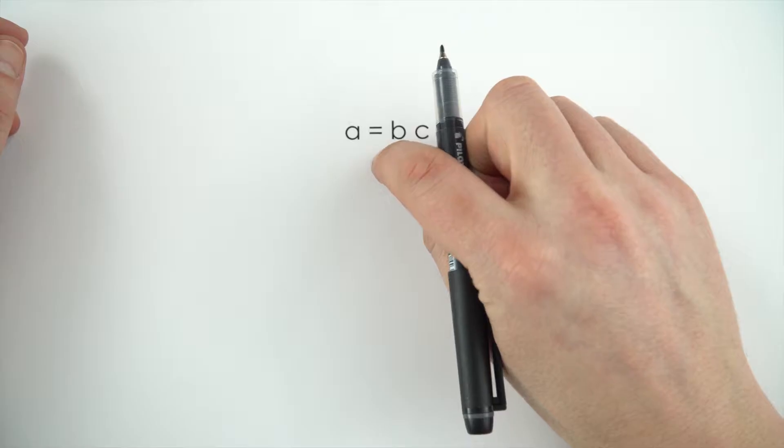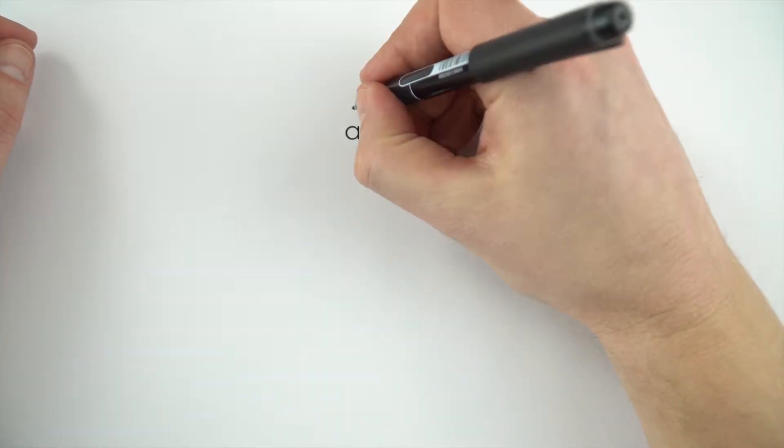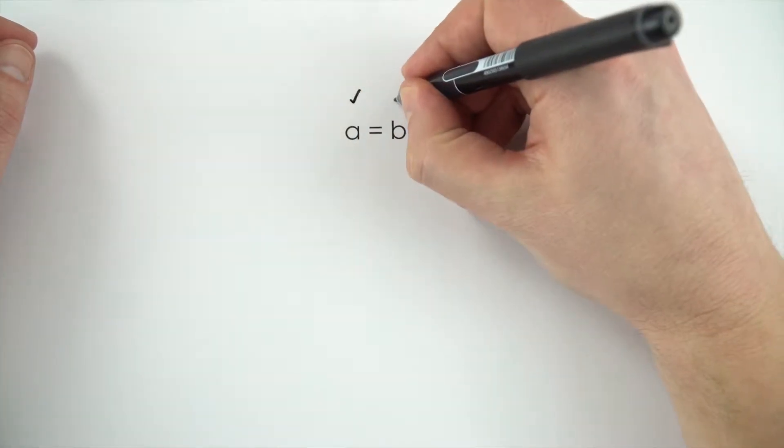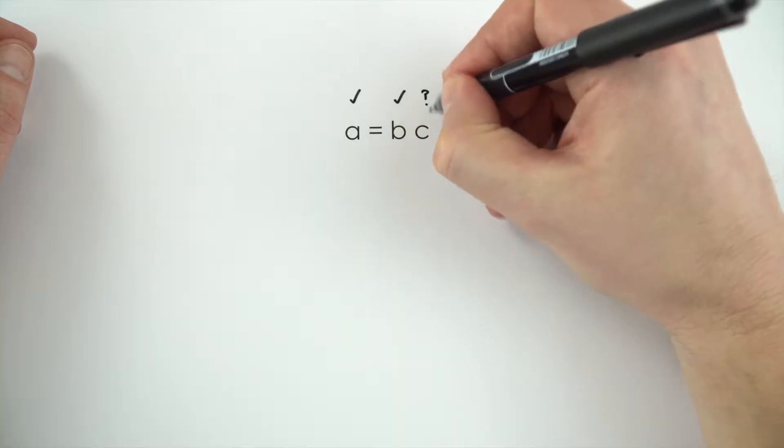So in this simple equation, a is equal to b times c. Now perhaps we knew the value of a, we knew the value of b, but we didn't know the value of c.